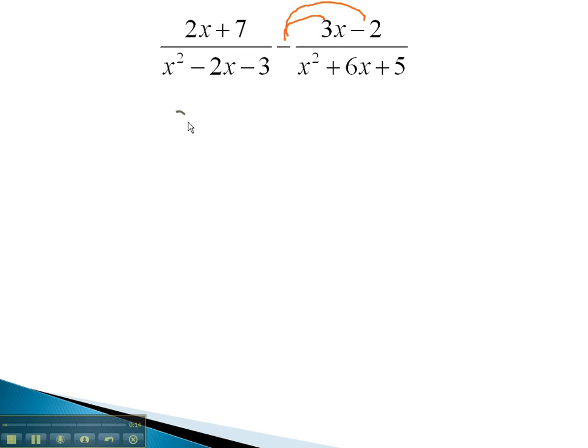As we do, the expression is now 2x plus 7 over x squared minus 2x minus 3. Now, it's plus, after we distribute the negative, to get negative 3x plus 2, changing the signs, over the x squared plus 6x plus 5.